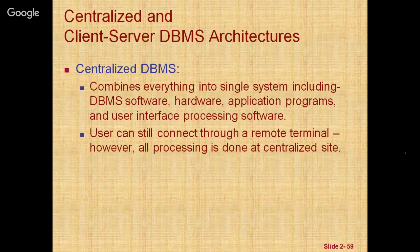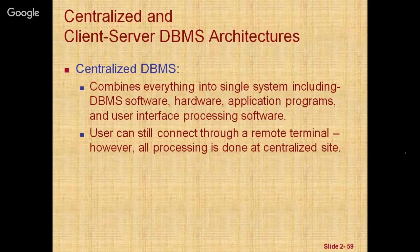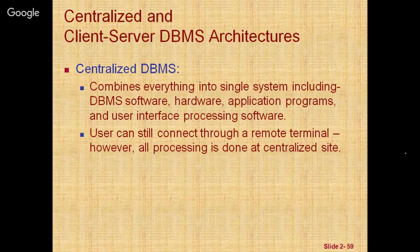The best example is the old railway reservation system, where computers only had the processing unit but not the storage — the centralized server maintained that. As prices of hardware declined, most users replaced their terminals with PCs and workstations. Database systems initially used these computers like display terminals, so the DBMS itself was centralized — all DBMS functionalities, application program execution, and user interface processes were carried out on one machine.